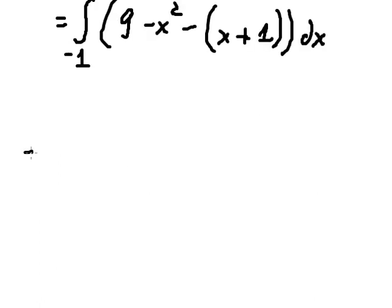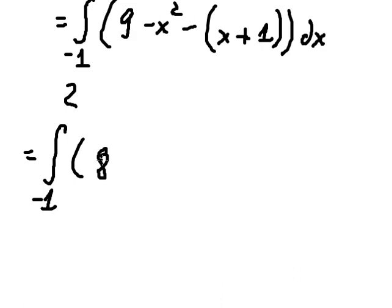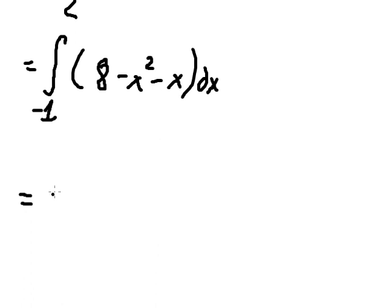So in this one, we have nine minus one, which gives us eight. Then we have negative s squared minus s, and now we have the final expression to evaluate.